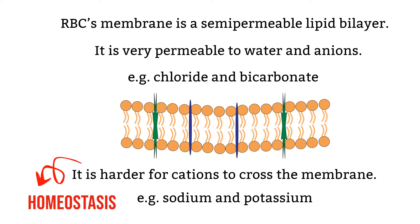Normally, potassium is found primarily inside the red blood cells and sodium is found outside. This is how the red blood cells maintain homeostasis, and this is how a patient's electrolyte results could be influenced by a hemolyzed sample. When the red blood cells are hemolyzed, they release potassium into the plasma, causing potassium levels to be falsely elevated.